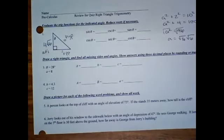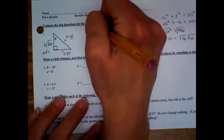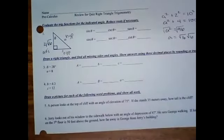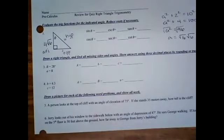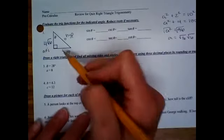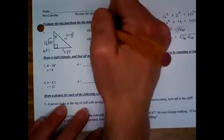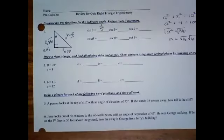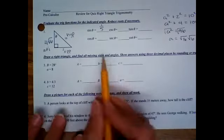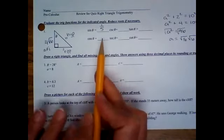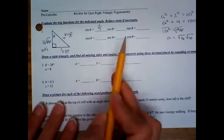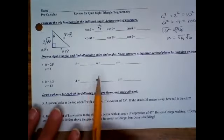So sine is opposite over hypotenuse. That would be 2 over 10. Now we are going to have to reduce that though. So 2 over 10 would reduce to 1/5. Now let's do cosine. You can do these in whatever order you want, but I'm going to do sine, cosine, tangent, and then we'll do the reciprocal ones.